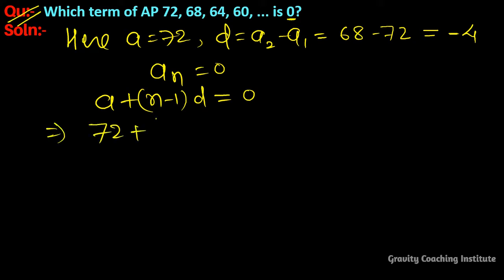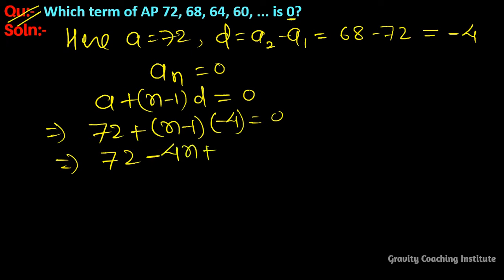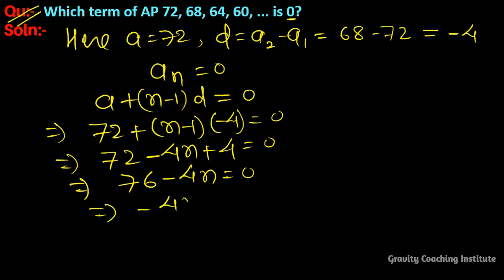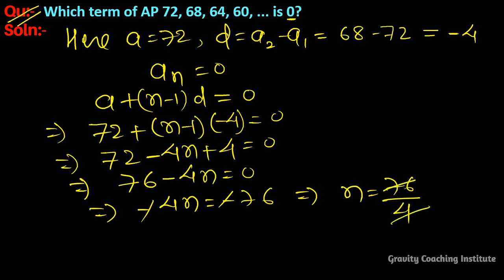Substituting a = 72 and d = minus 4: 72 + (n-1)(minus 4) = 0, which implies 72 minus 4n plus 4 = 0, so 76 minus 4n = 0. Therefore minus 4n = minus 76, and the minuses cancel, giving n = 76 divided by 4 = 19.